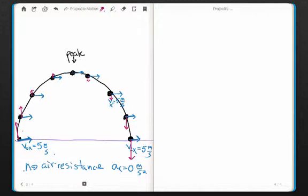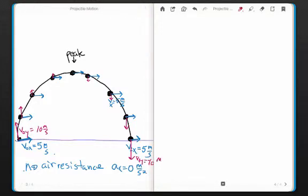So what I mean by that is if the v initial y here was, let's say, 10 meters per second. Over here, the v final y would be negative 10 meters per second.